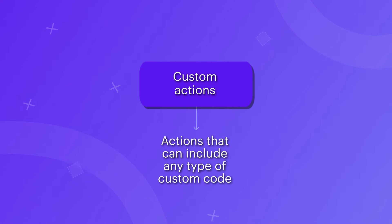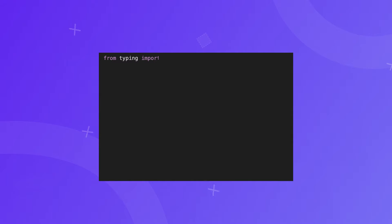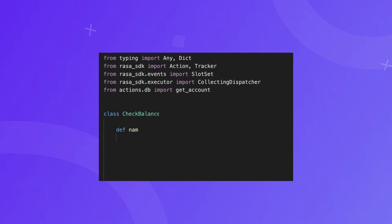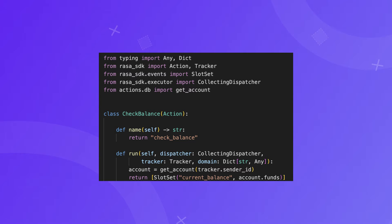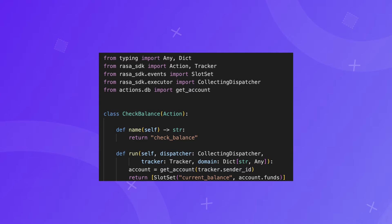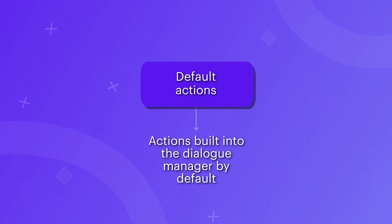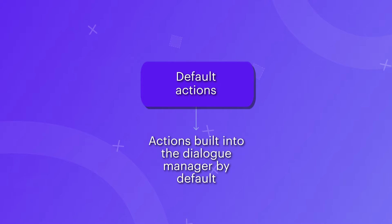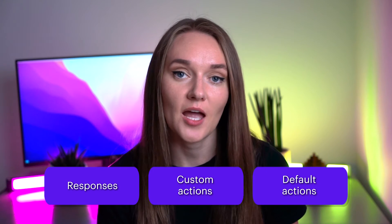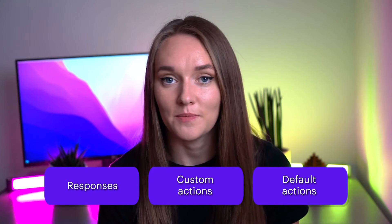The second type is custom actions — a type of action that can include any type of custom code. With custom actions, you can implement any type of behavior, from connecting to a database and extracting necessary details, calling an API, all the way to implementing human handoff where the conversation is handed over to an actual human agent. And finally, default actions are implemented in Calm by default and are used by the dialogue understanding component when driving the conversation. You can always customize default actions to personalize your assistant.